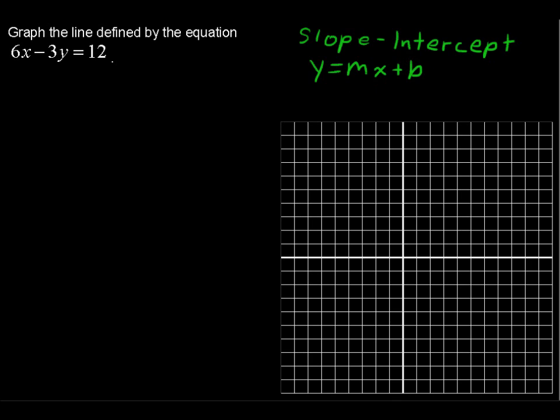And that m is the slope, the rise over the run, or the change in y over the change in x. And the b is the y-intercept, that is where the line crosses the y-axis.